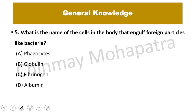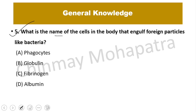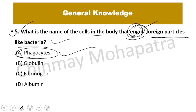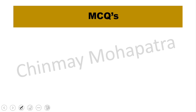Question number 5: What is the name of cells in the body that engulf foreign particles? Cells that engulf foreign particles like bacteria are called phagocytes — phagocytic cells or phagocytic bodies.